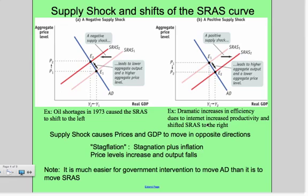Let's talk now about the other side, which is supply shock and shifts of the short-run aggregate supply curve, using the examples we discussed in class. For example, oil shortages in 1973, a change in the availability of commodities, caused the short-run aggregate supply curve to shift dramatically to the left. It leads to lower aggregate output and higher aggregate price levels.